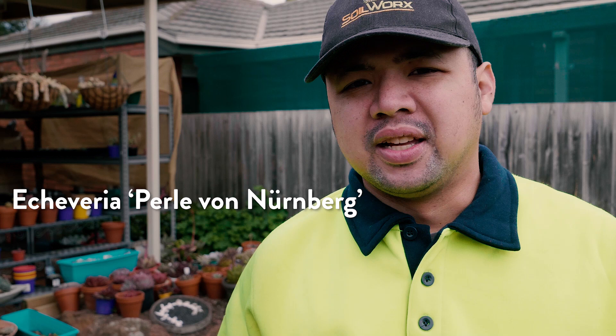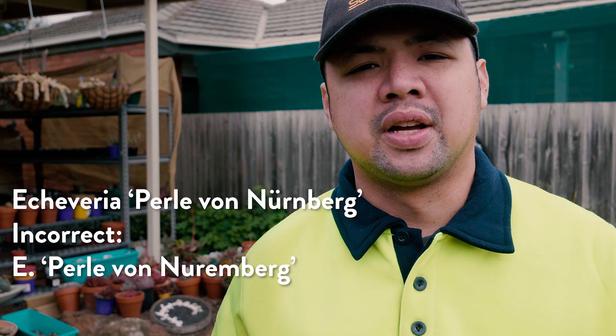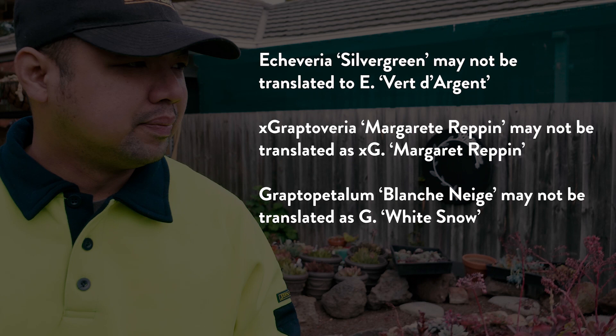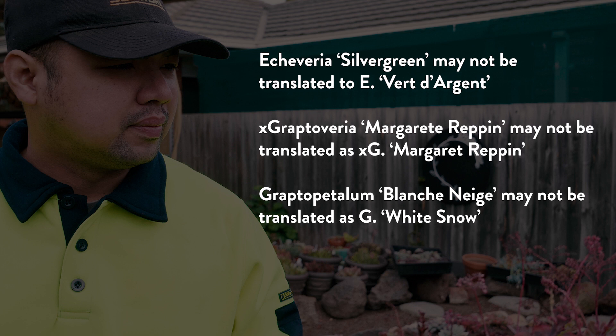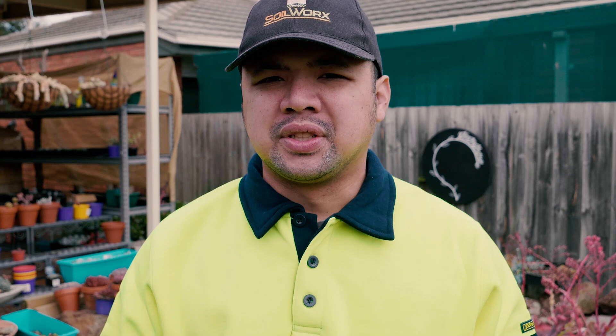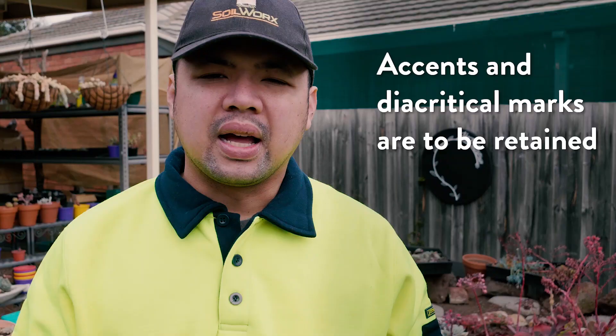Cultivar names in different languages should not be translated, but they can be transcribed or transliterated letter by letter. An example would be 'Pearl von Nürnberg' — it may not be translated into 'Pearl of Nuremberg,' but it can be rewritten as Echeveria 'Pearl von Nürnberg.' And here are a bunch of other examples. Speaking of other languages, transcriptions must be made with specific systems — so if you're using Mandarin Chinese, Korean, or Japanese, this is what you should be using.